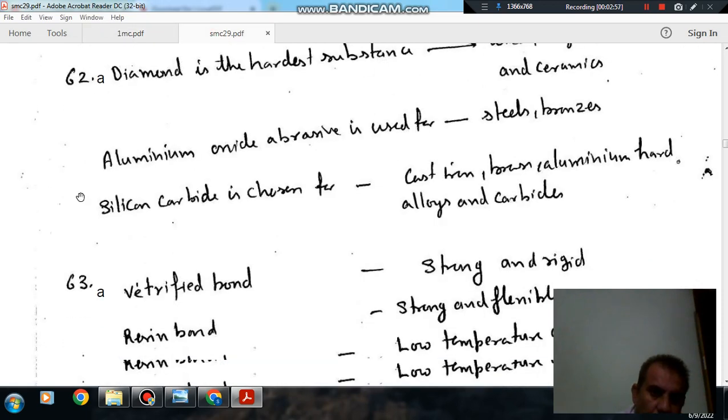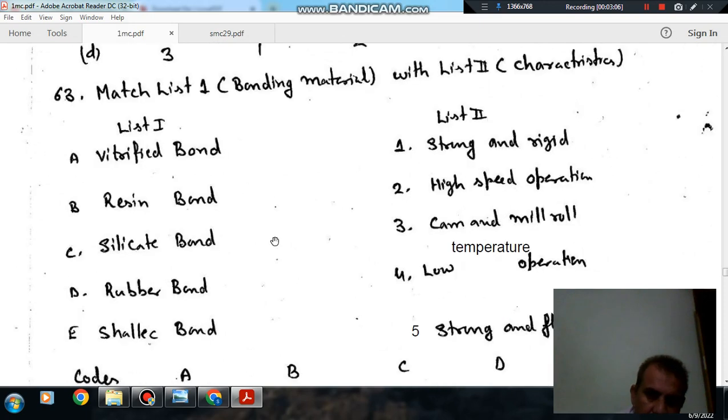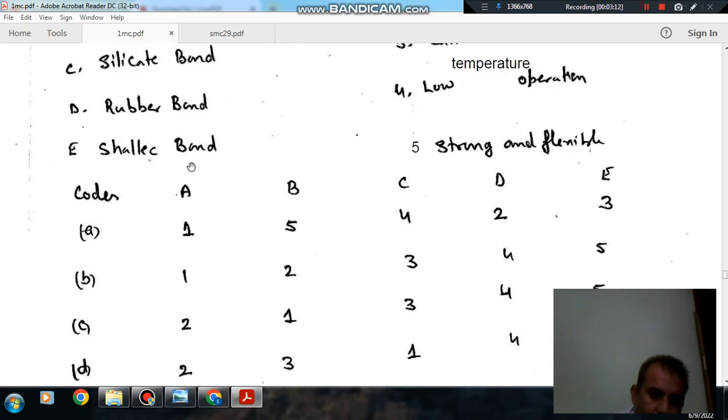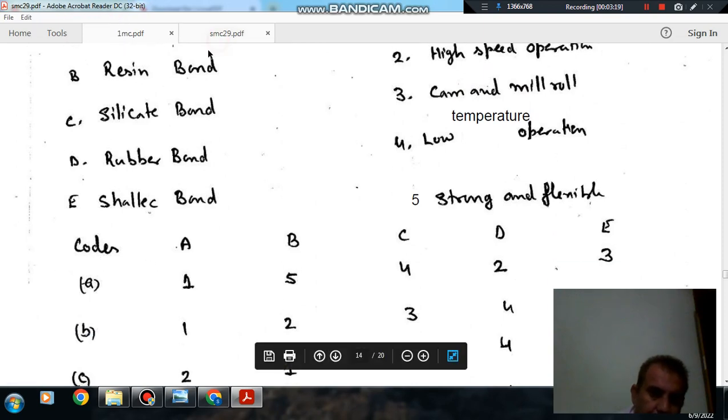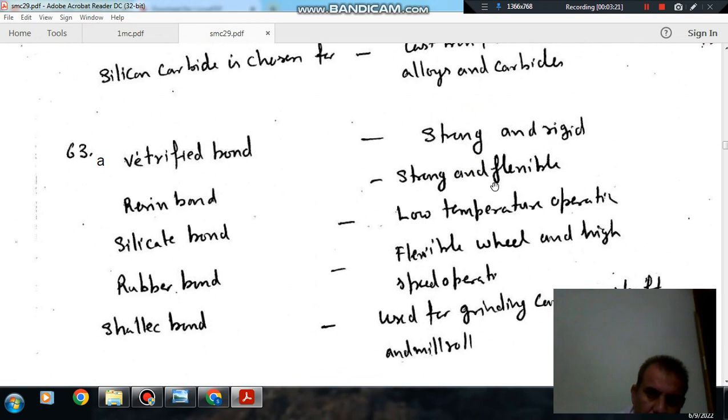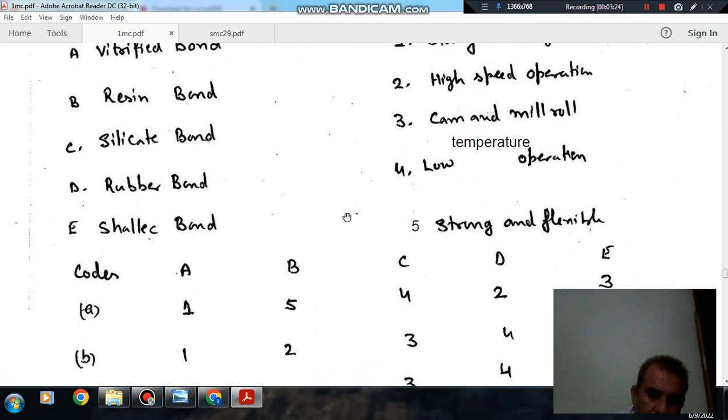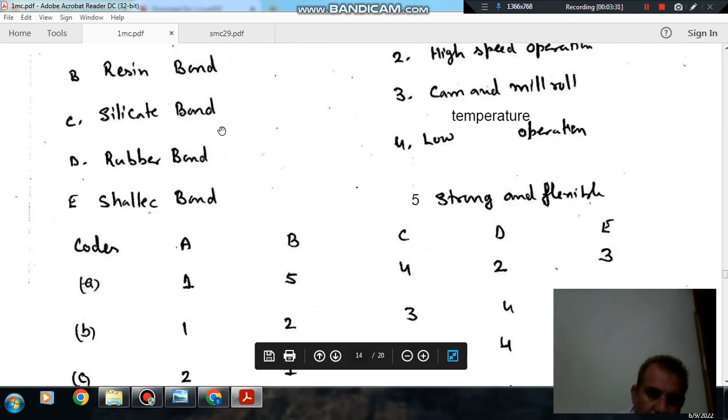So here, vitrified bond is strong and rigid, so A is 1. Resin bond is strong and flexible, so this is 5. So the right answer is A. C is 4.